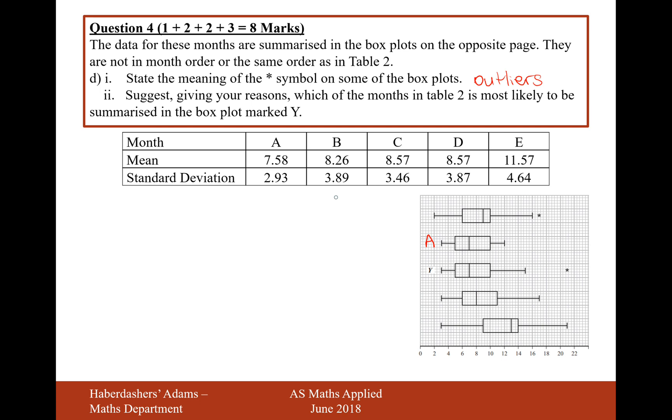So I'd say A is probably lining up with this one here, because it's got the lowest mean and the lowest standard deviation, because the box is quite, is more thinner than any other box plots. So I'd probably say, therefore, that Y would match up with B, because that's got the next lowest mean, but it's also got a slight bigger standard deviation in it as well. So on both of those variables, it does make sense that Y will match up with B.